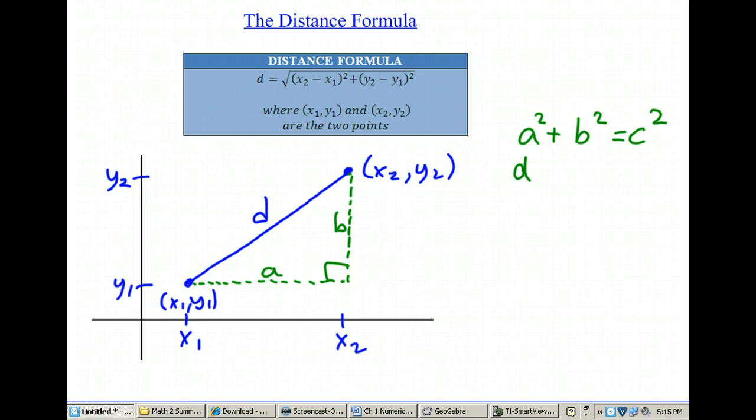So in other words, we have that d squared is equal to a squared plus b squared, or I can write it as d equals the square root of a squared plus b squared.